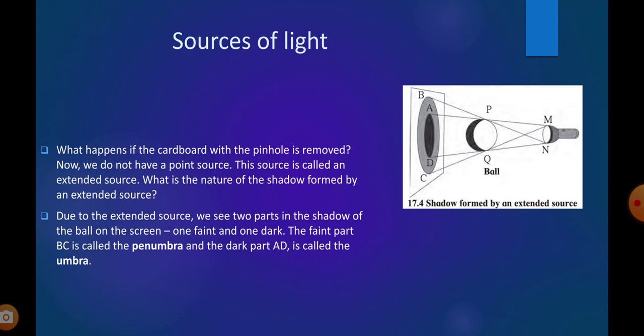What will be the nature of the shadow? Due to the extended source, we see two parts in the shadow of the ball on the screen. One faint and one dark. Faint means light color and one will be dark. See, in the diagram it is clear. The faint part BC is known as the penumbra and the dark part AD is called the umbra. These two terms you have to learn from this session. Umbra and penumbra.